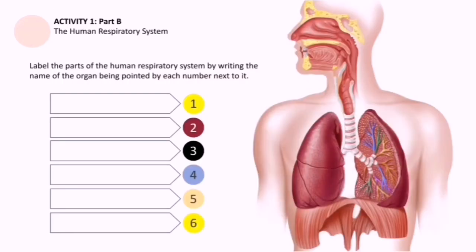Let us now jump to Activity Number 1, Part B, the Human Respiratory System. For this, you need to label the parts of the human respiratory system by writing the name of the organ being pointed by each number next to it. On your answer sheets, you may write numbers one through six, and then pay attention to the arrow being shown by each slide and write the name of the organ.